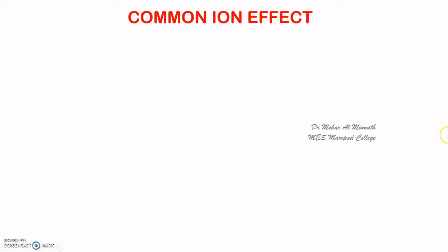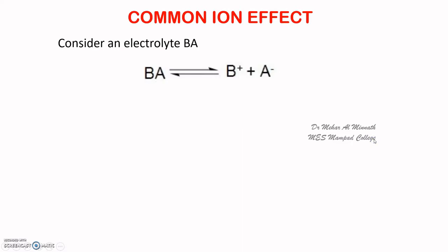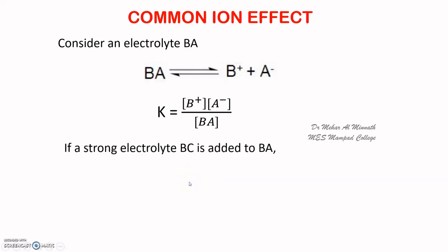Now let us consider an electrolyte BA, which ionizes to B plus and A minus. So its equilibrium constant can be written by this expression. Now suppose we add another electrolyte BC — a strong electrolyte BC is added to BA. BC also ionizes to B plus and C minus.